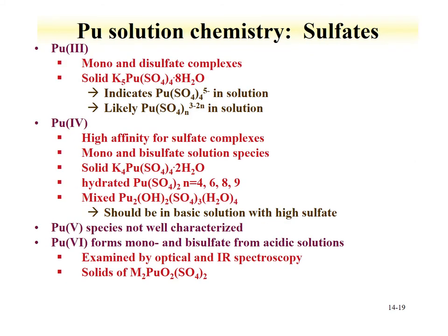A range of plutonium sulfates have been evaluated, including plutonium-3 where you get mono- and disulfate complexes, and solid potassium plutonium sulfates with water have been prepared. Plutonium-4 has high affinity for sulfate complexes, with both mono- and bisulfate complex solution species formed. The plutonium-5 species is not well characterized, and like plutonium-4, the 6 forms mono- and bisulfate from acidic solutions, examined by both optical and IR spectroscopy.